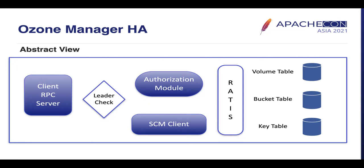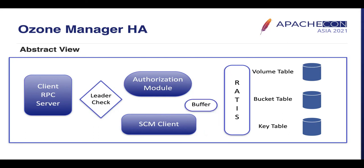In the HA model, three Ozone Manager instances run and form a Raft ring. With RATIS leader election, one Ozone Manager is elected as leader and all client calls are processed only by the leader — enforced by a leader check before processing any client request. After the leader check, authorization is done and the request is processed. The processed request is sent via RATIS to the followers where information is stored in RocksDB. Once acknowledgement is received from a quorum, the request succeeds and the client is notified. To improve throughput, buffering logic is implemented to buffer requests before sending them via RATIS.